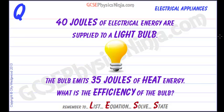Now we have a chance to put our efficiency equation calculation into practice. In this question we have a light bulb which is being supplied by 40 joules of electrical energy. The bulb emits 35 joules of heat energy, and the question is: what is the efficiency of the bulb?